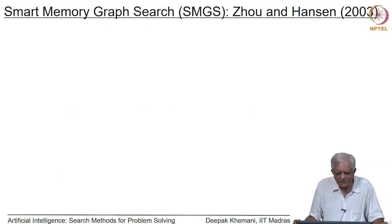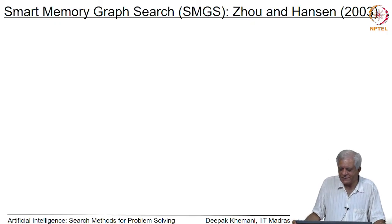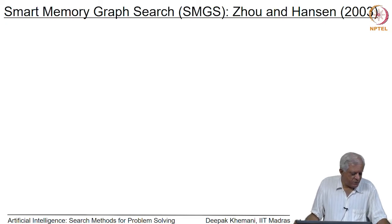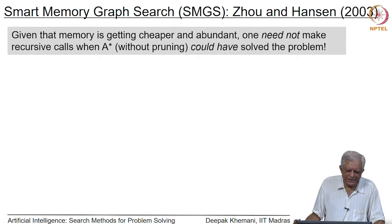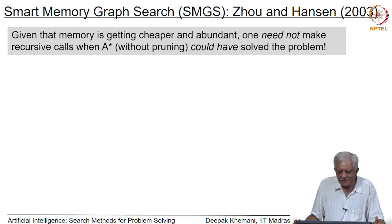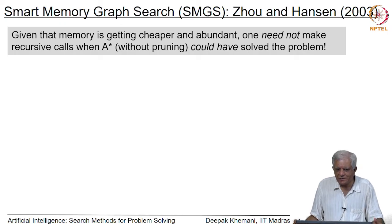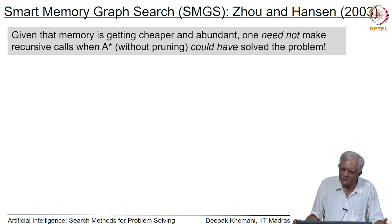A little bit later, another pair of researchers, Zhao and Hanson, came up with a new algorithm which they called Smart Memory Graph Search. The motivation behind that was: given that memory is becoming cheaper and machines are becoming faster and bigger, should we be rigid like divide and conquer frontier search and always recursively keep breaking down the problem into two smaller problems?